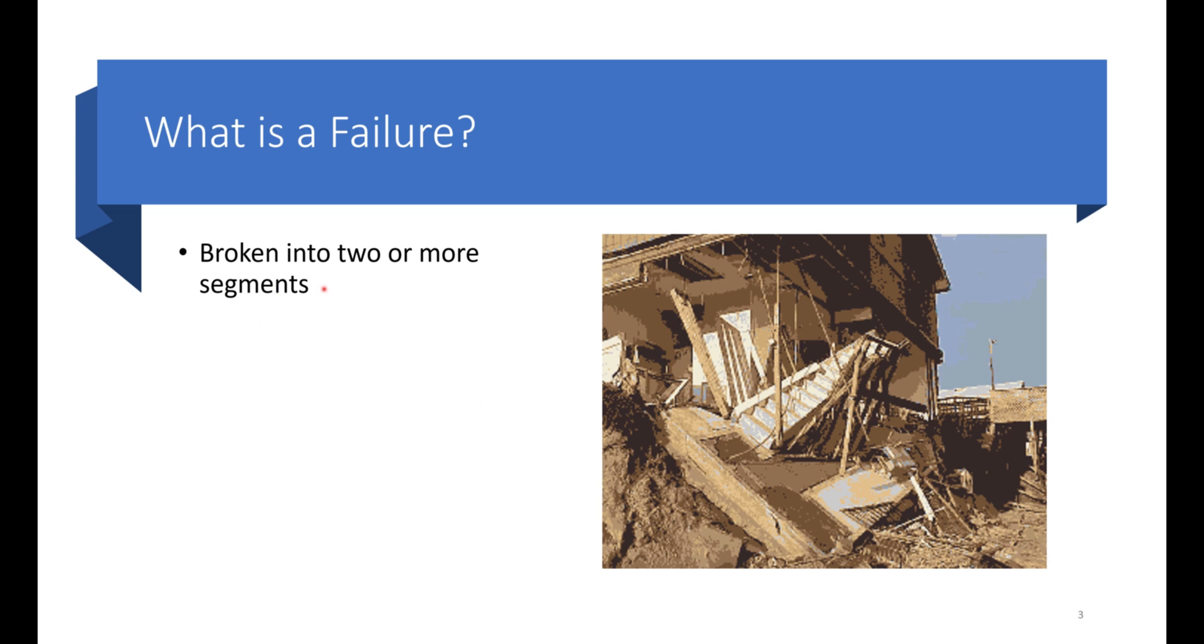If a mechanical structure or machine or element is broken into two or more segments, we call it a mechanical failure. Another form of mechanical failure is if something is permanently distorted, so if it is deformed or changes its shape and geometry which is not coming back to its original form once the applied force is removed.